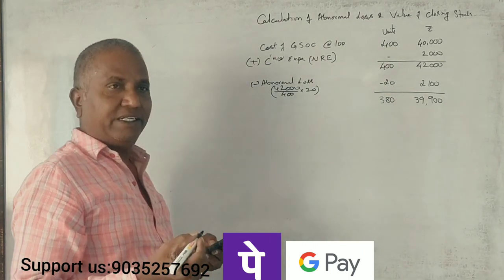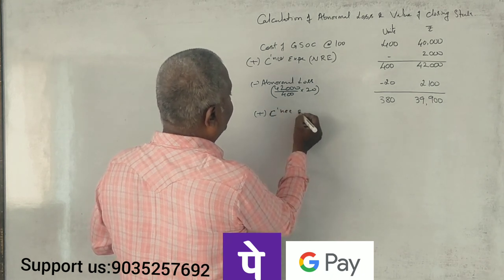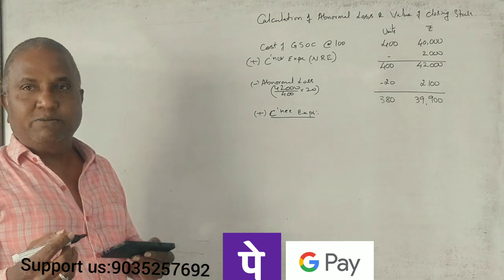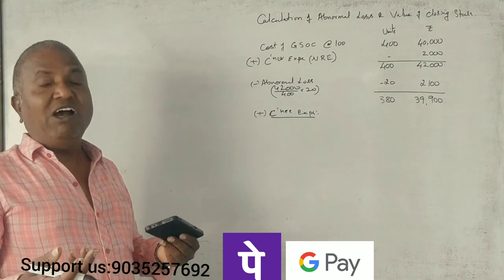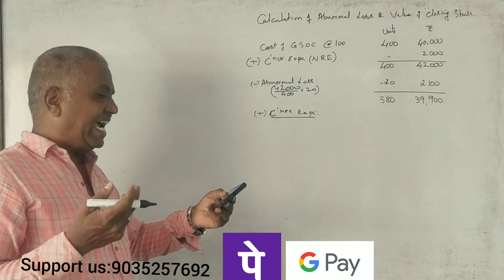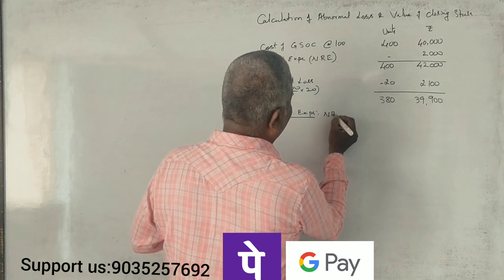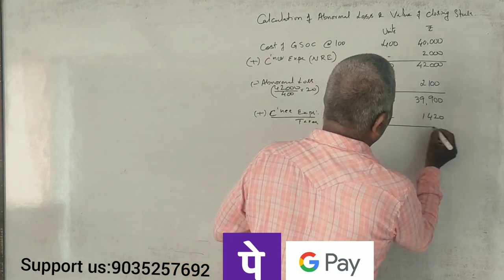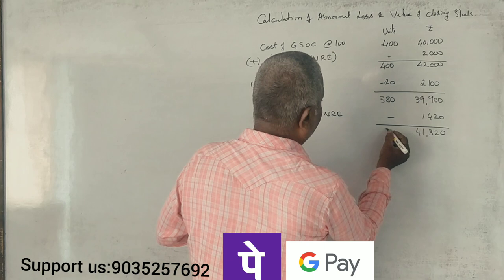380 units — correct. Now, consignee expenses: there are 2 types. Non-recurring expenses include taxes. Taxes of ₹1,420 are non-recurring expenses. Adding these, we get a total of ₹41,380.